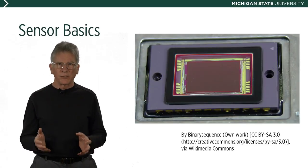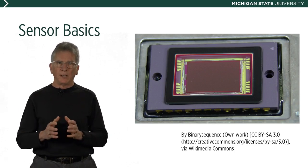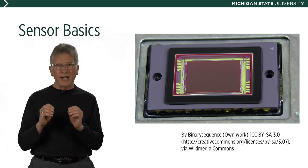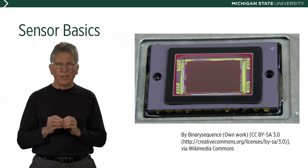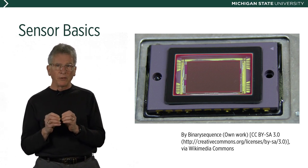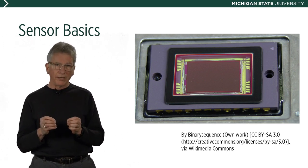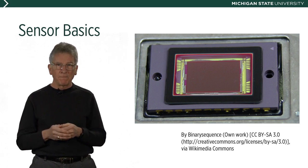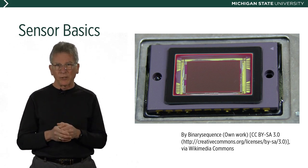So let's take a look at the sensor. What is a sensor? A sensor is a surface with a pattern of tiny light-sensitive cells. These light-sensitive cells are there to record the amount of red, green, or blue light that is coming from our subject, passing through the lens, and hitting the sensor.